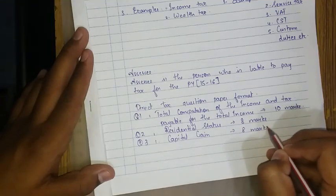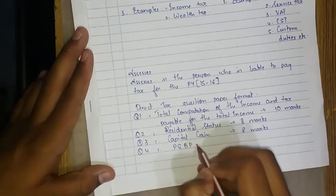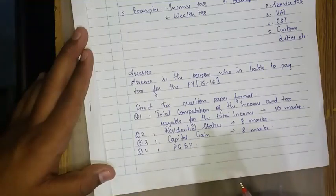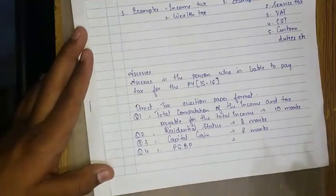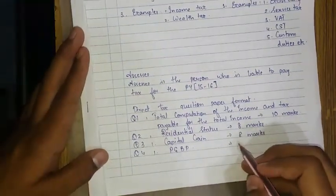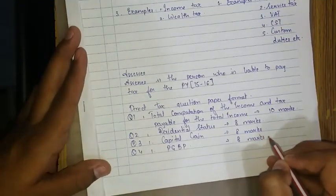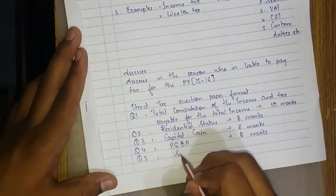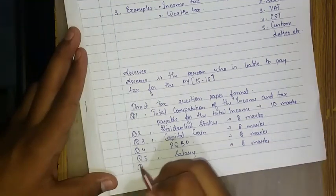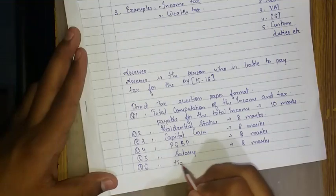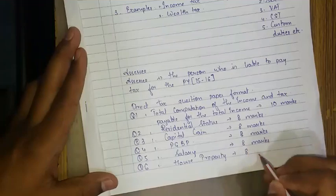Question number four: PGBP. PGBP stands for income from professional gain and business profession. Professional gain means chartered accountant and all business, business profit means business profit. Question number five: salary, it also comes for eight marks. Question number six: house property, eight marks.